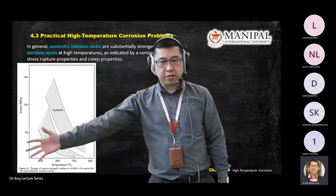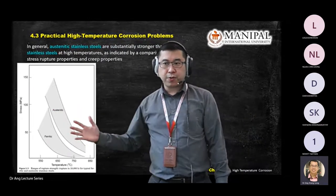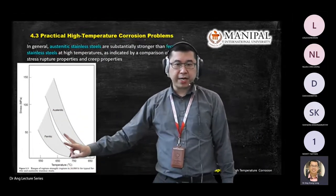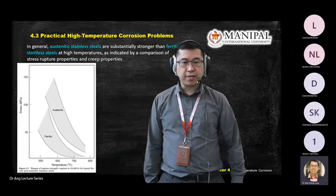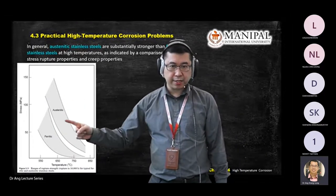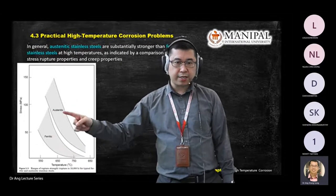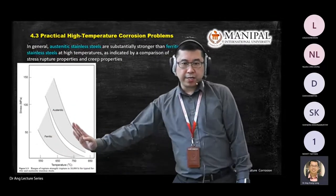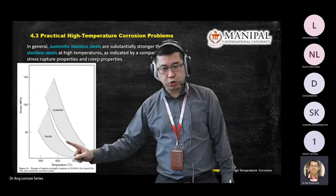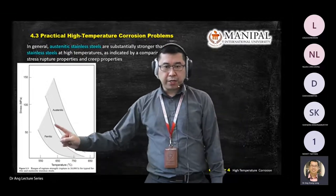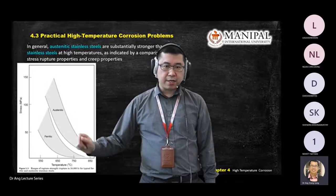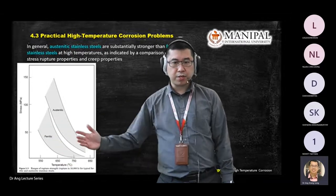I'm going to show you two types of graphs. The first one is stress versus temperature, comparing two types of stainless steel here — ferritic and austenitic. There are two types of metals — one has a higher curve. You can see there's a significant difference between the two types of material.